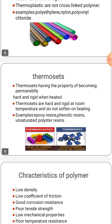Next one is thermosets. Thermosets are materials which remain in a permanent solid state after being cured only one time. The polymers within the material cross-link during a curing process to form an unbreakable, irreversible bond. Thermosets will not melt even when exposed to extremely high temperatures. They have many advantages: high elasticity, toughness, and resistance to many chemicals. One of the popular thermosets is polyurethane.